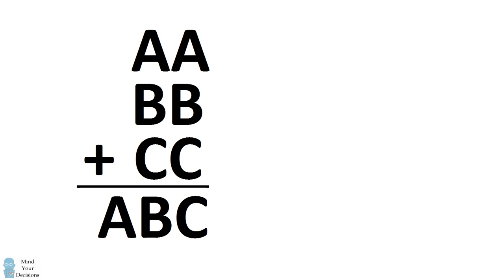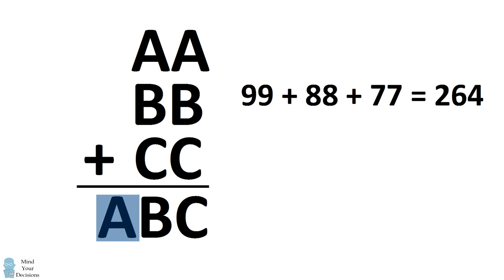We'll get started by focusing on the value for A. When you add three two-digit numbers, the most you can get to is in the 200s. So we know that at most, A can have a value that's 2.